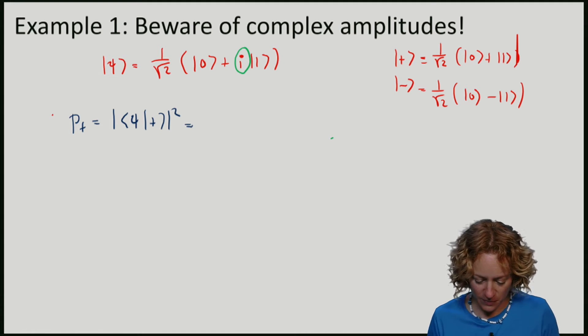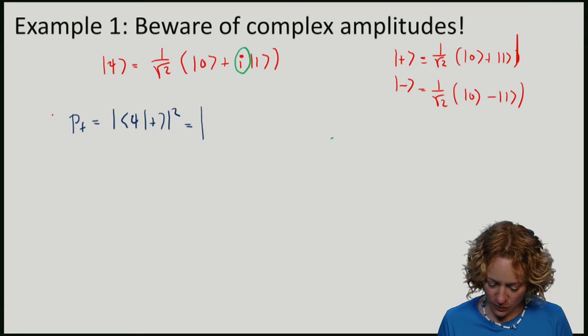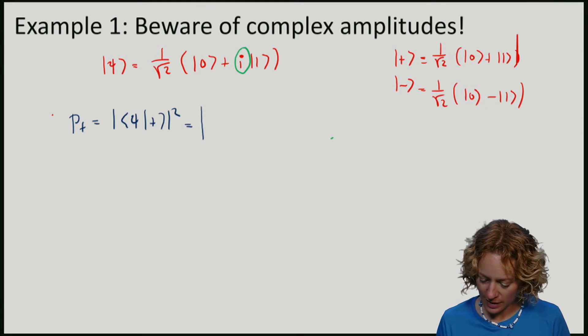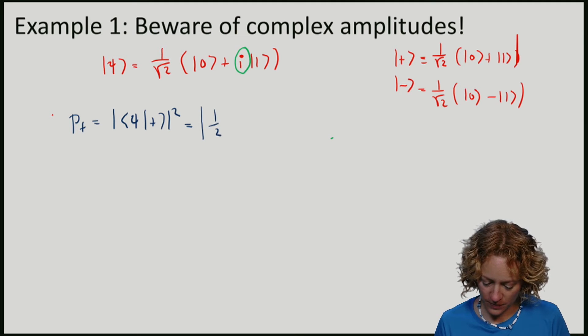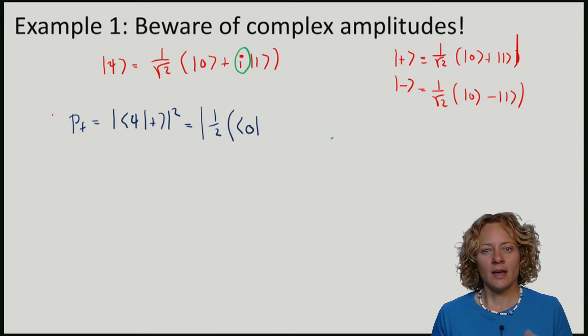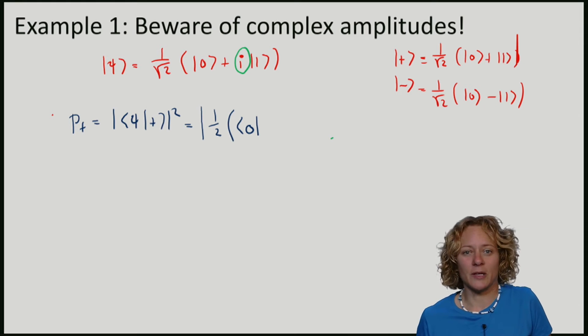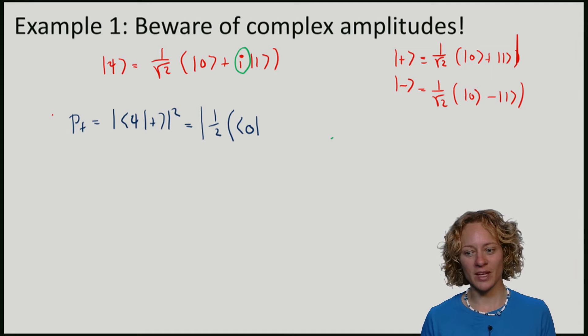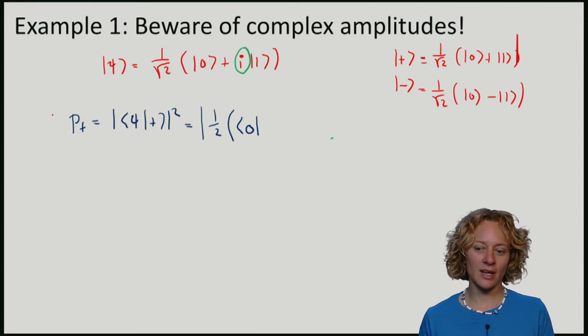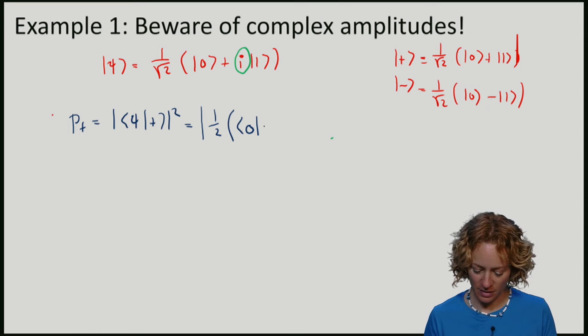So let's compute what we get. So we'll insert here Psi, which gives us one over square root of two, and I get another one over square root of two from the plus, so I have one half times zero. And I'm now taking the bra of Psi, and remember that the bra is the conjugate transpose. So we'll turn all of these vectors around, but also for the coefficient, we have to take the conjugate transpose. And here this means that we will get minus I times one.